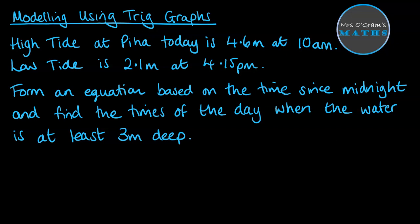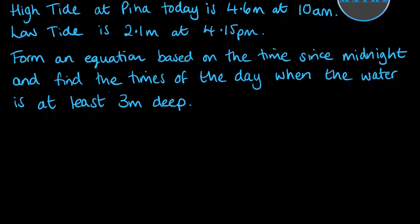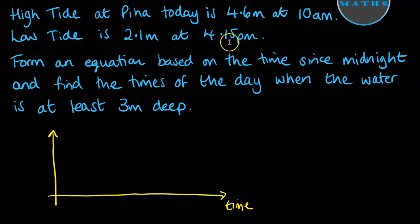We're going to form an equation based on the time since midnight and find the times of the day when the water is at least three meters deep. The first thing we should do is a little sketch of what we're looking at. Along our x-axis we will have the time since midnight, and our y-axis will be the height of the water. Now we know the top happens at 4.6 at 10 a.m. and the bottom happens at 2.1 at 4:15 p.m.